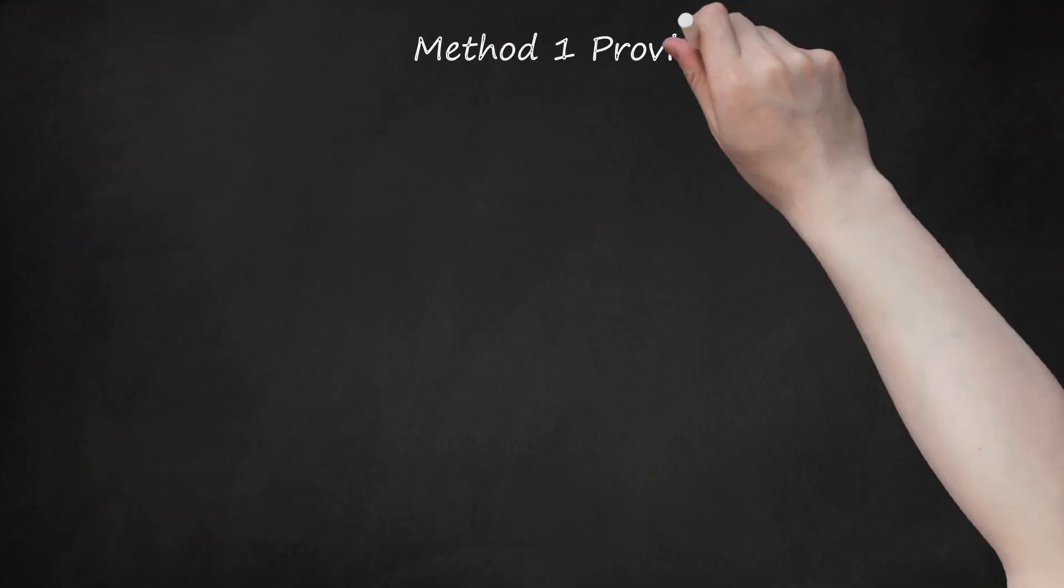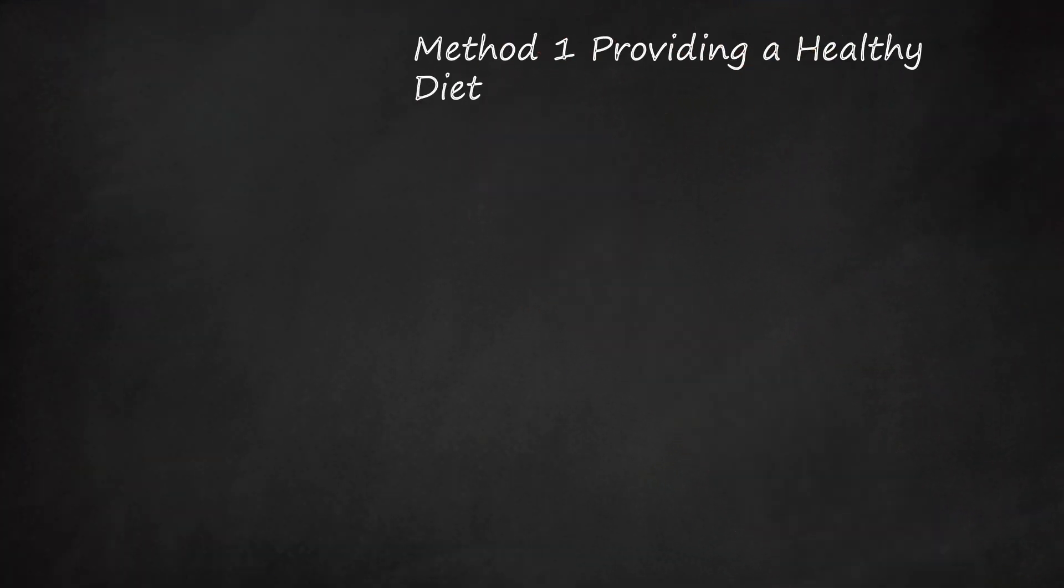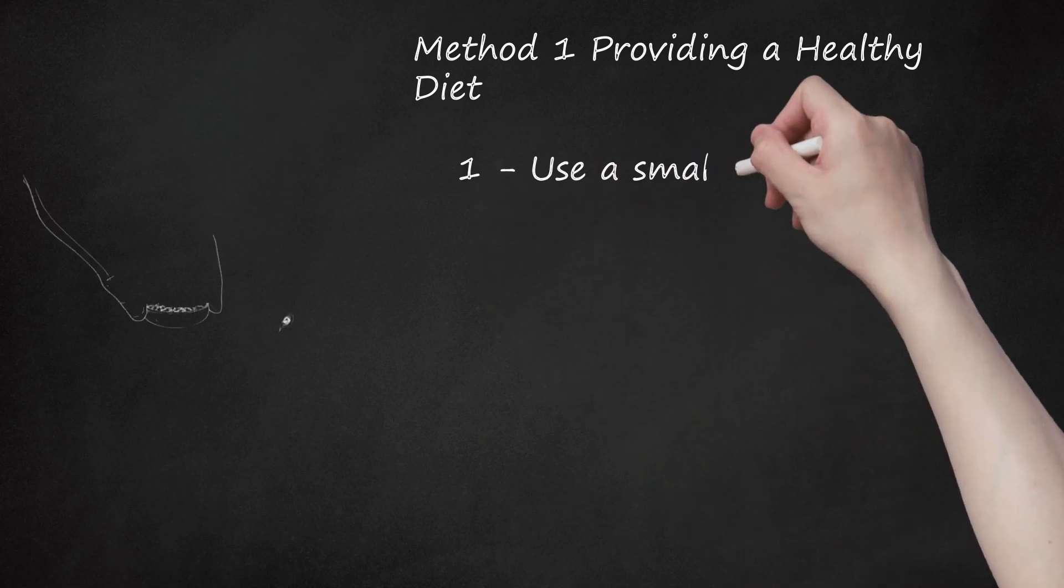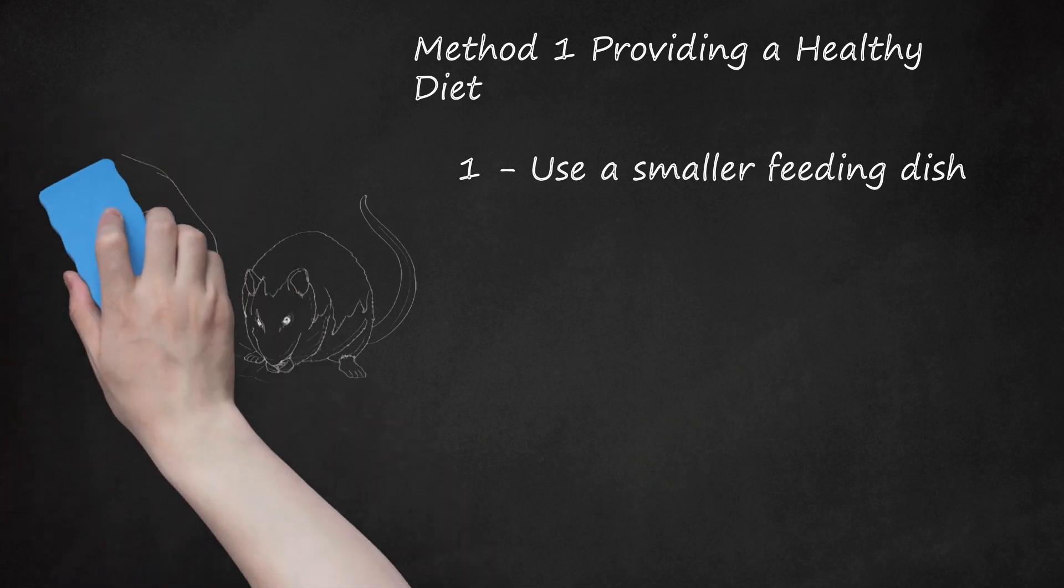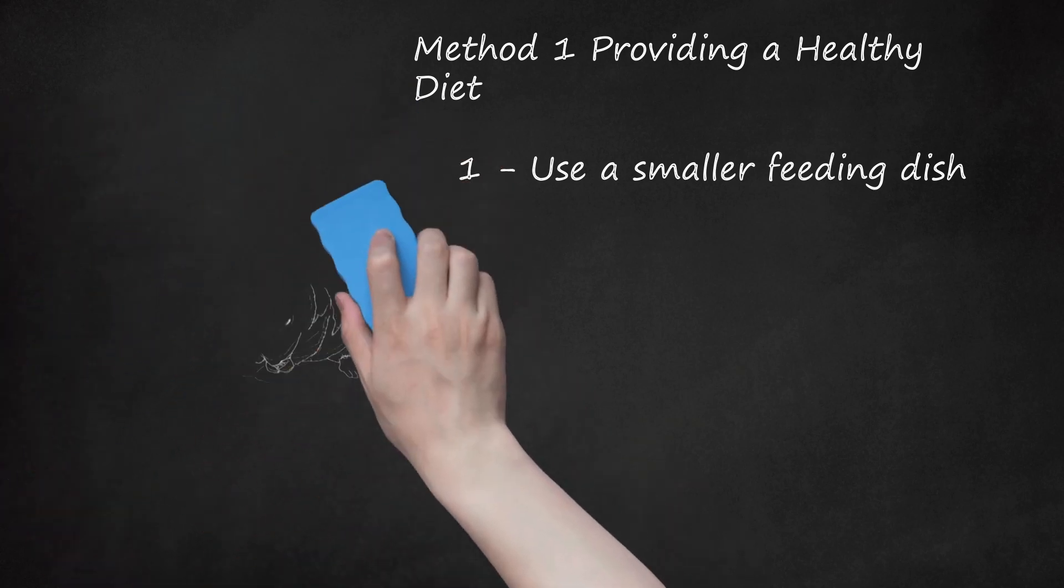Method 1: Providing a Healthy Diet. First, use a smaller feeding dish. A small ceramic, not plastic, food dish that's only large enough to hold one feeding block will suffice. The larger the bowl, the more your rat will eat. Small bowls serve as natural portion control. Make sure your feeding bowl is sturdy so that it doesn't tip over as your rat eats.